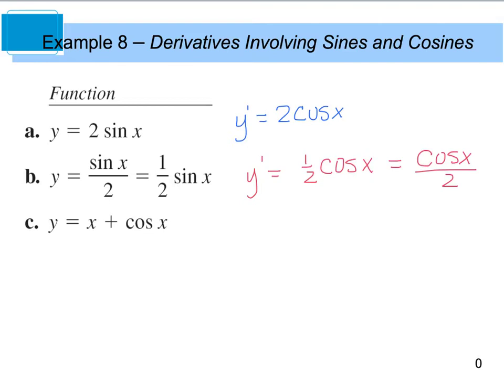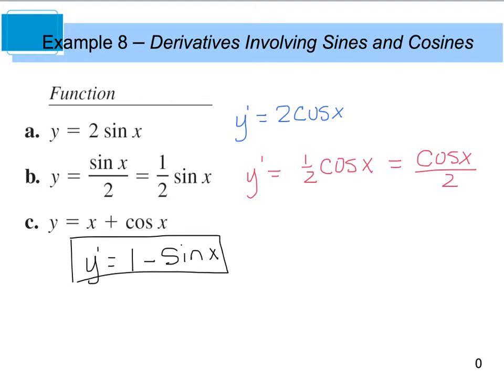Last but not least, part c: y' is going to equal — the derivative of x is 1. The derivative of cosine is negative sine, so the plus sign changes to negative. And that is our final answer.